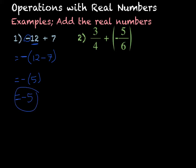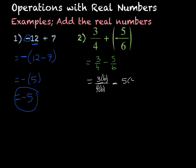The next problem, we have a fraction: 3 fourths plus negative 5 sixths. So what this question is actually saying is 3 fourths minus 5 over 6. We need to make a common denominator, so I'm going to multiply by the other denominator to make it easy — 4 times 6. If I do it to the bottom, I've got to do it to the top, so I multiply by 6. And then I subtract 5 times 4 over 6 times 4.